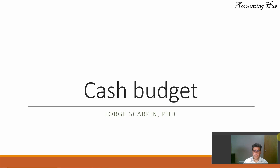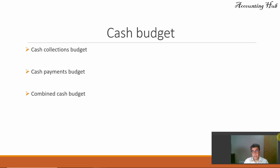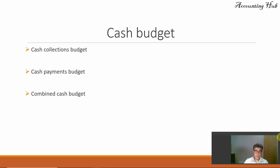Hello, welcome to Accounting Hub. I'm Professor George Carpin, PhD in accounting. Today's topic is the cash budget. We have three budgets and we will combine them in one video: cash collection, cash payment, and the combined budget. To do our cash budget, we need all of our other budgets ready — sales budget, production budget, operating expenses budget, and so on. All of those videos are available in our channel and linked in the video description.